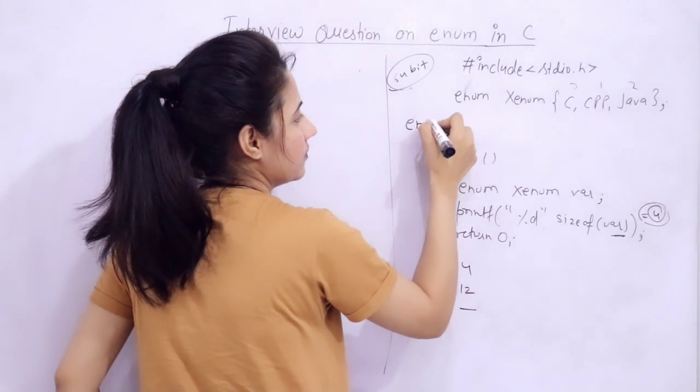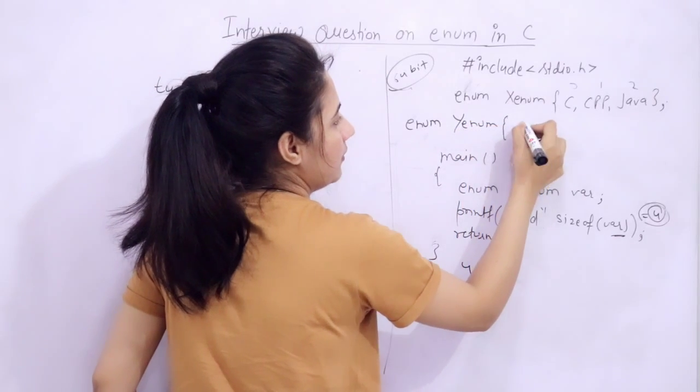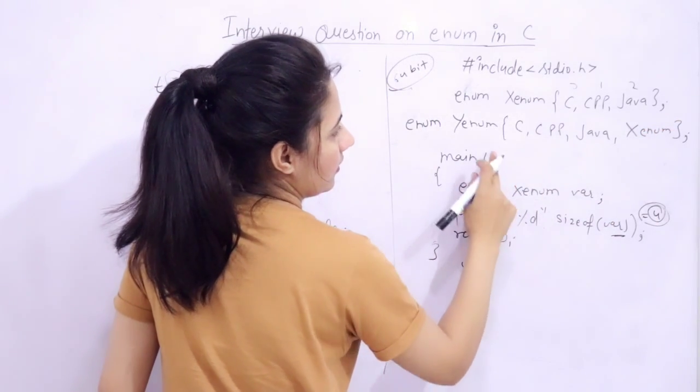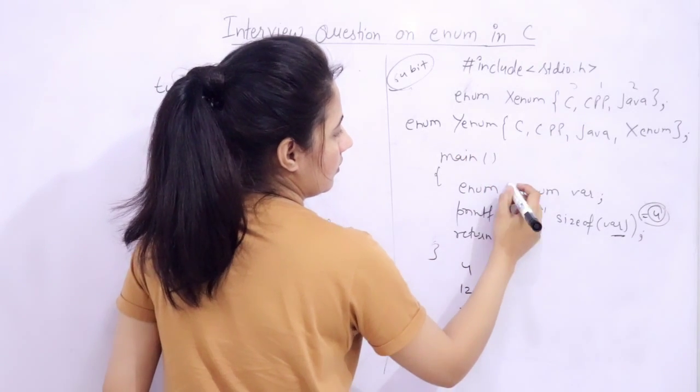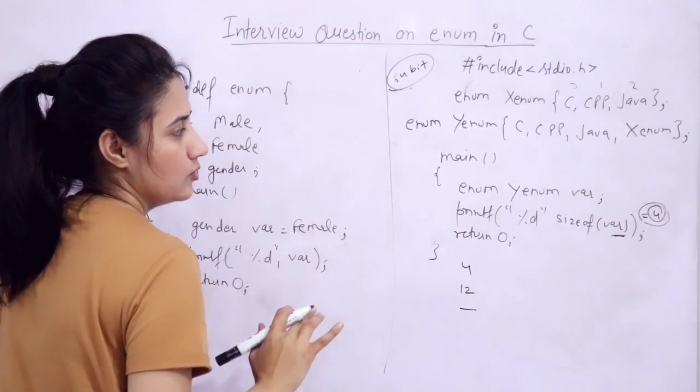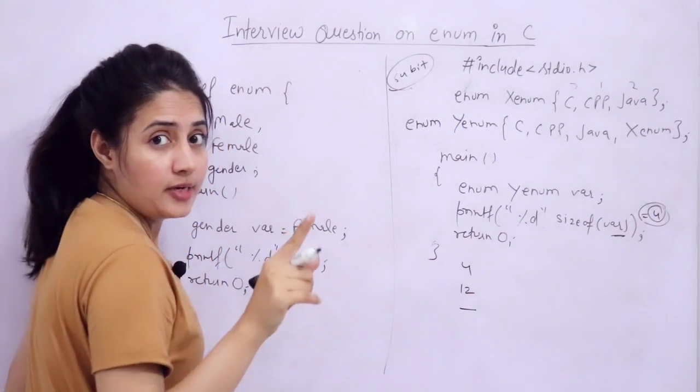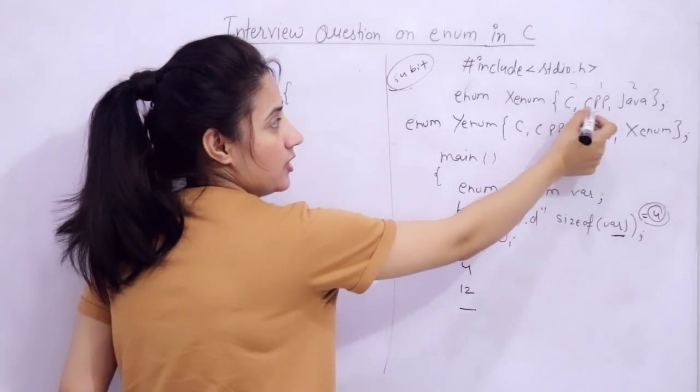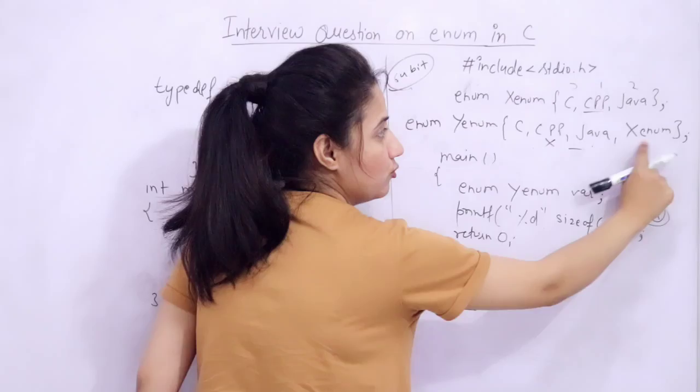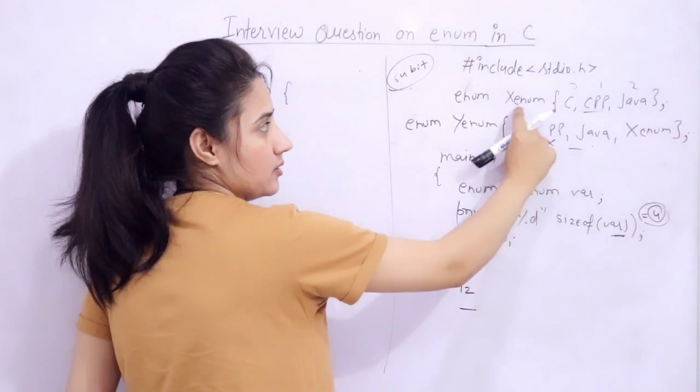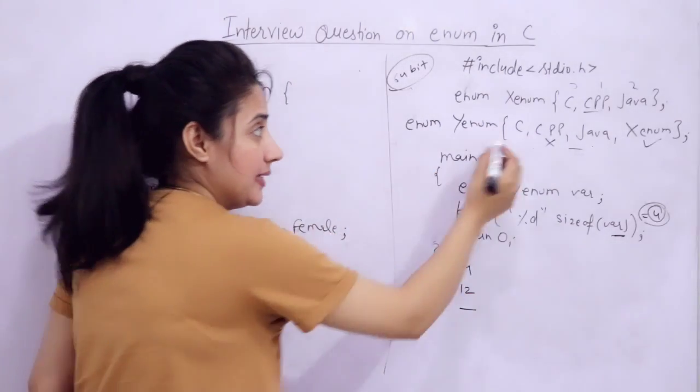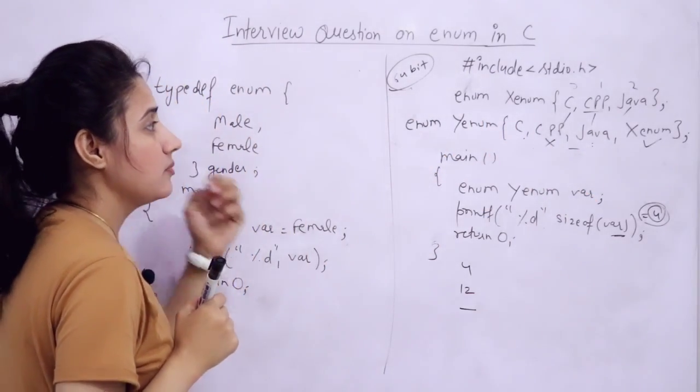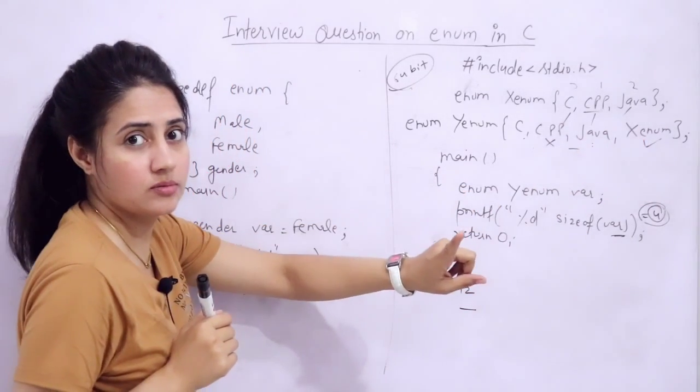The answer would be 4 bytes only. Now if I modify this with one more enum y_enum and here I am writing c, cpp, java, and x_enum. In main I am doing y_enum var and sizeof var. What output you will get? One property - in the same scope, same values are not allowed. These are same, so it will give error. But here I am using enum within enum - this is allowed. This will not give error. But these values are duplicate because in the same scope we are using two enums and these constants are same, so it will give error. Enum within enum is allowed but duplicates are not allowed.